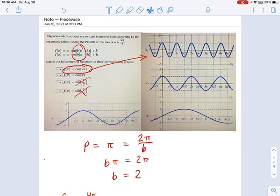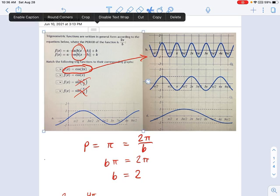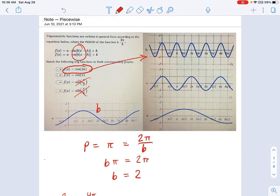In general, just remember that as b gets small, b less than 1, it's a fraction. Those are where you're going to have stretched out functions. And when you have b greater than 1, that's when you have compressed functions.